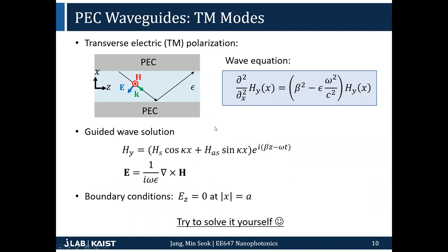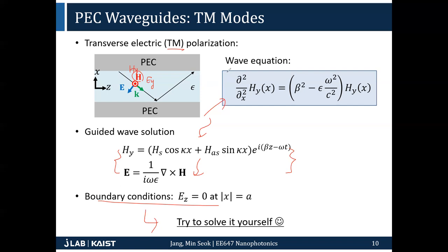For TM polarization, I recommend you solve it by yourself. The difference between TE and TM polarization is that in TE the electric field is along Y, while in TM the magnetic field is along Y. The wave equation is exactly the same, and you can find the guided wave solution, apply boundary conditions, and derive the dispersion relation.